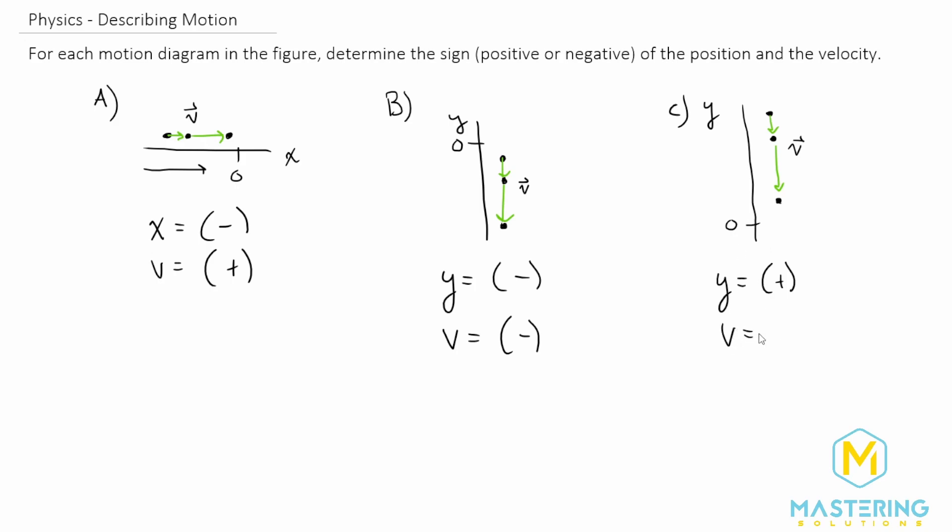And then the velocity v are all going towards the negative side of the y-axis. So just like on part b, we'll have a negative velocity for part c.